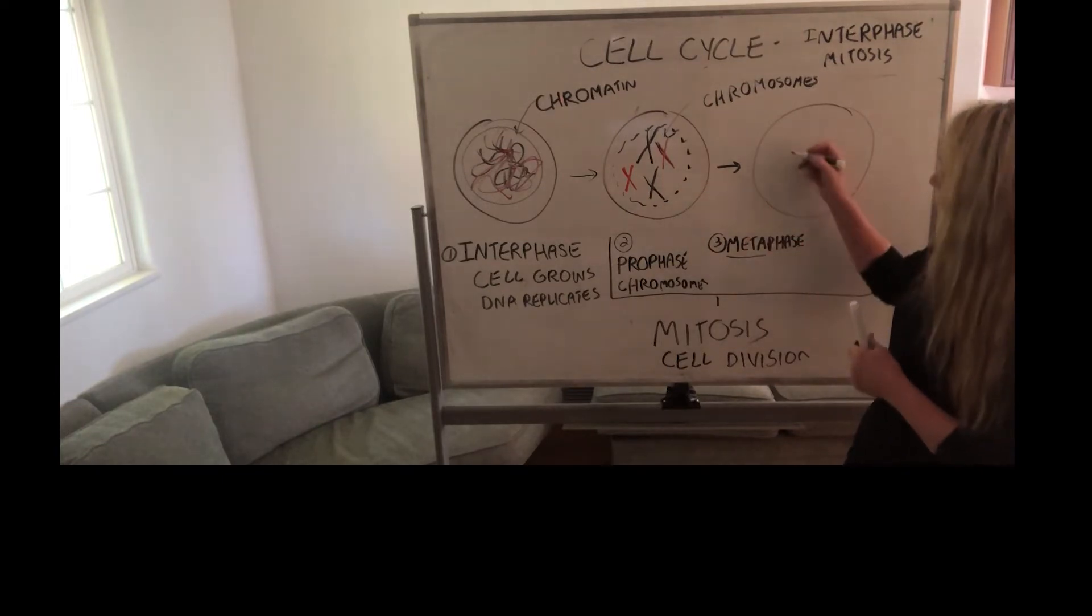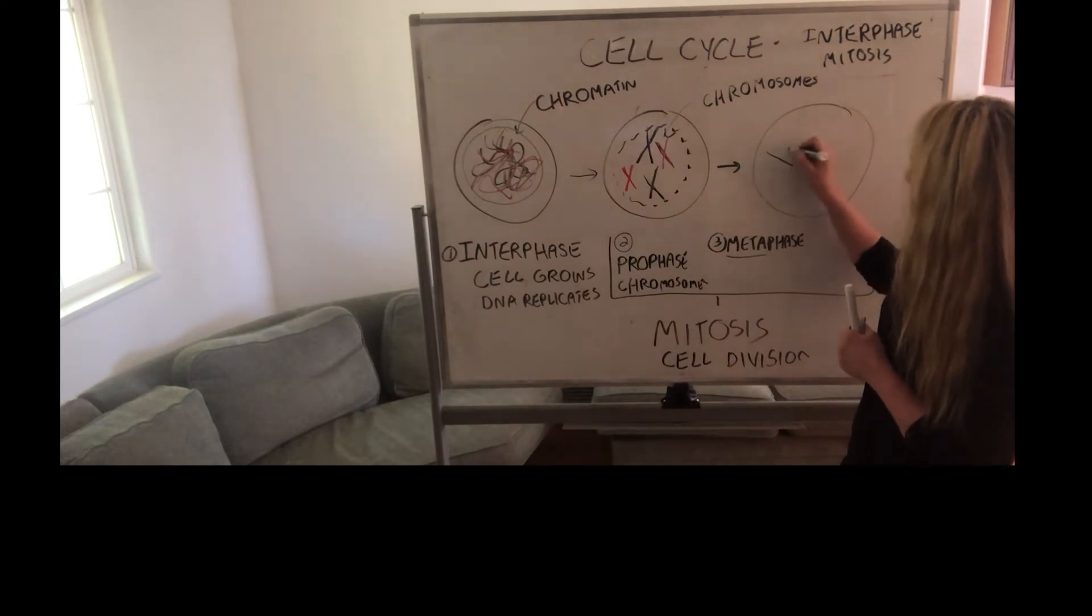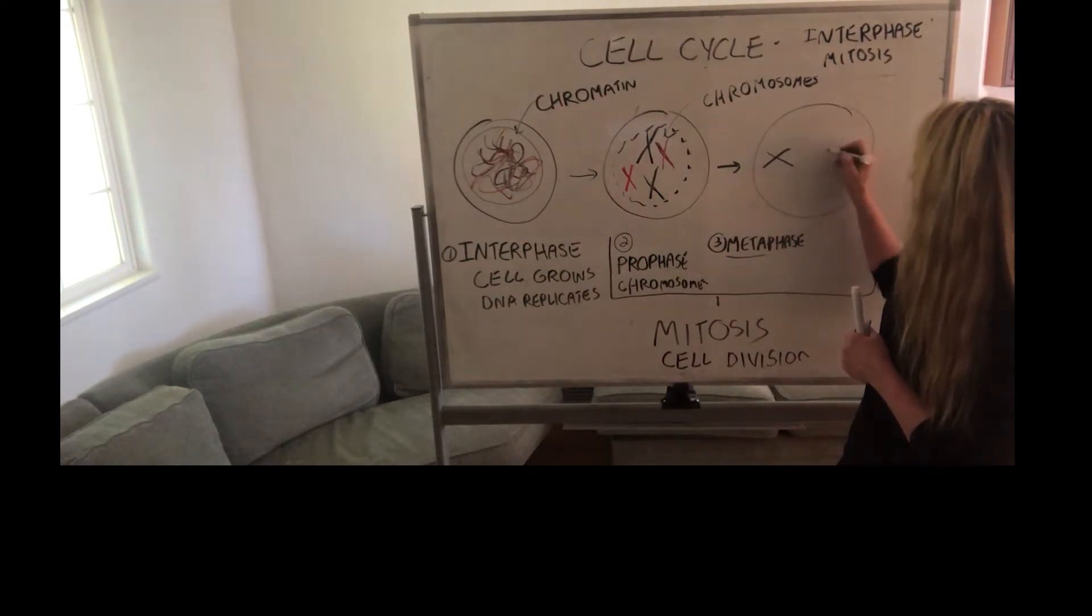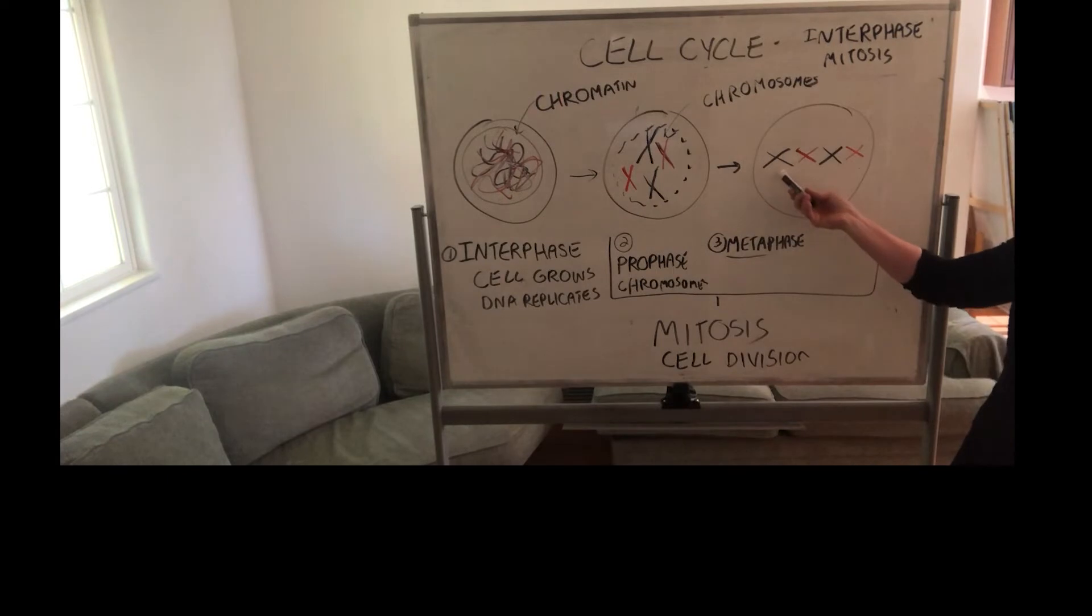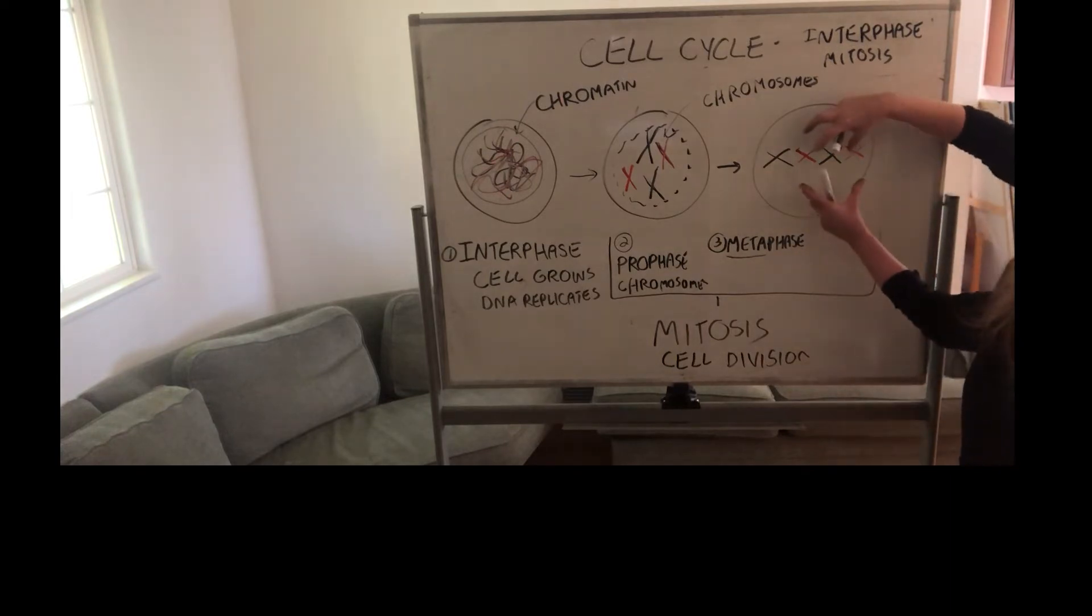...line up along the middle of the cell. We line them up. So if you have your licorice, you've got—you made an X with black licorice, X with red, and maybe like one of those giant marshmallows pulling them together, because these are connected. So these are the chromosomes, and then what's going to happen is they're going to be pulled apart.